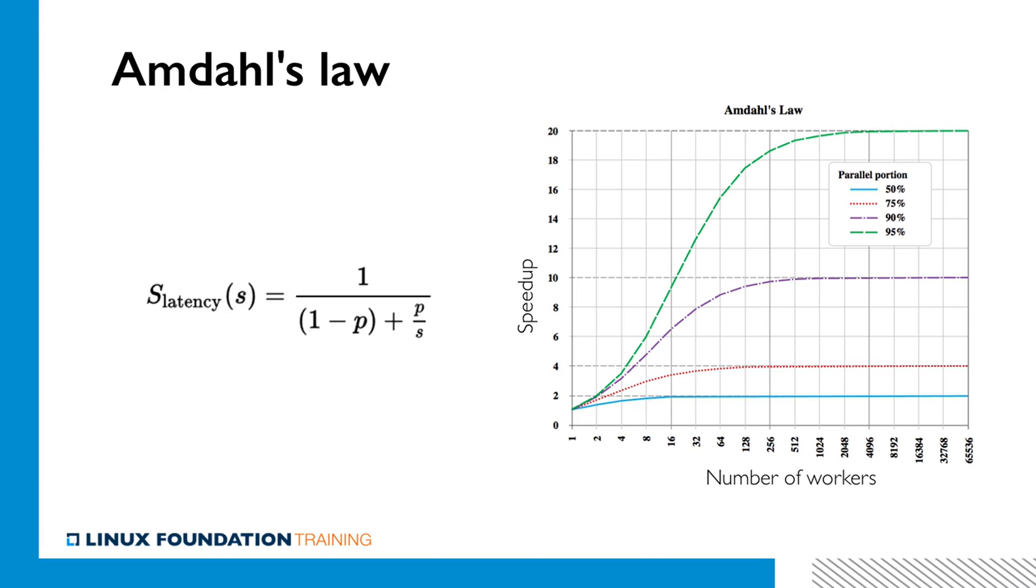On the x-axis, we will have a number of workers that we can throw at the problem. On the y-axis, we will plot the number of times we get to go faster if we throw that many workers at the problem. What we're plotting here are different lines corresponding to how much parallelism your overall task has. So the green line, for example, at the very top corresponds to your algorithm or overall task having a whopping 95% parallelism rate. The blue line at the very bottom corresponds to a more modest 50% of the overall task being parallelizable.